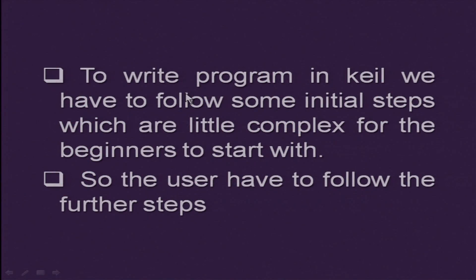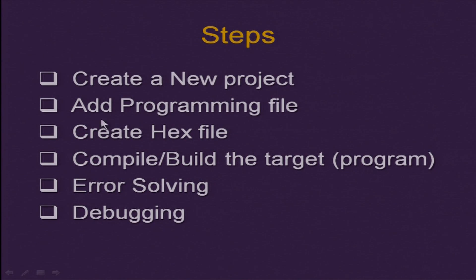To write programming in Keil, we have to follow some initial steps which are a little complex for beginners. The steps are as follows: first, create a new project; add a programming file; create hex file; compile; build the target; then error solving; and after that, debugging.